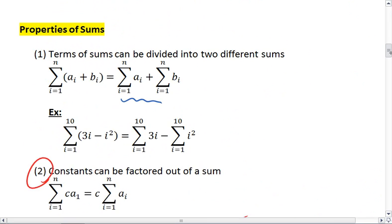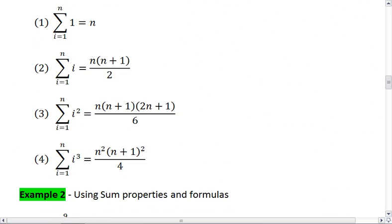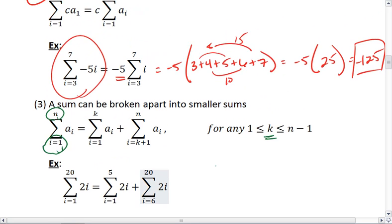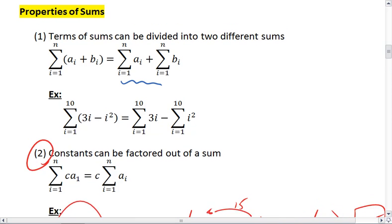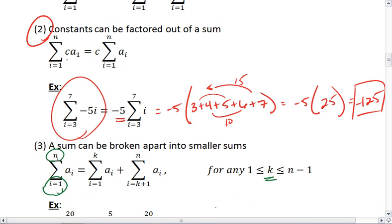All right, so those are the three properties of sums. And those are the basic properties. We're next going to look at some formulas. But first, I really need to make sure that you have those properties down, that we can split terms that are being added into two different sums. We can factor out a constant.